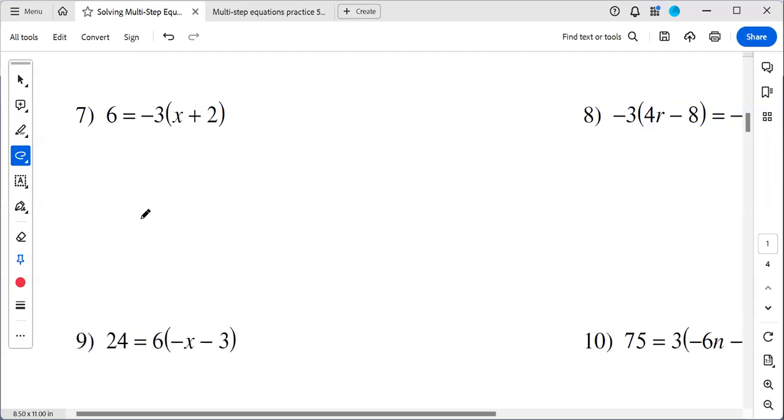All right, we're up to number seven now, and we're going to introduce the distributive property. So if you noticed before, we were always following distributive property first, then like terms on each side. And then after like terms on each side, you wanted to put the numbers on one side and the letters on one side.